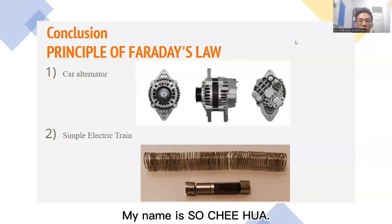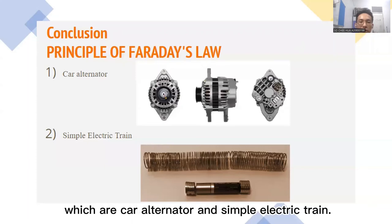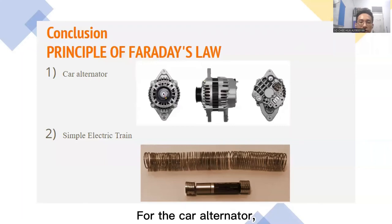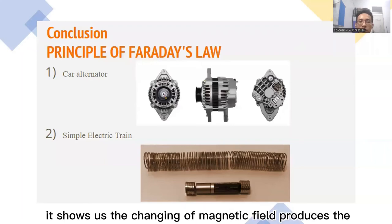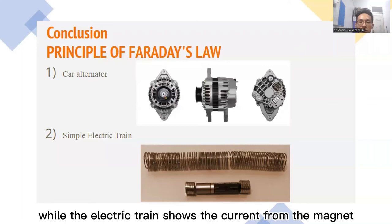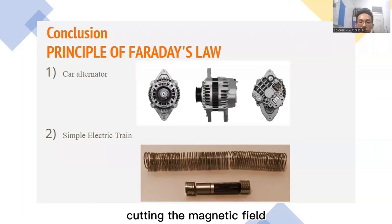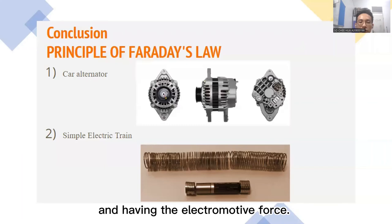My name is Sochi Hua. I am going to talk about the conclusion from these two experiments, which are car alternator and simple electric train. For the car alternator, it shows us the changing of magnetic field produces the electric field, while the electric train shows us the current from the magnet cutting the magnetic field and having the electromagnetic force.